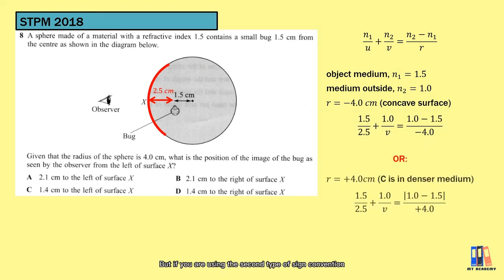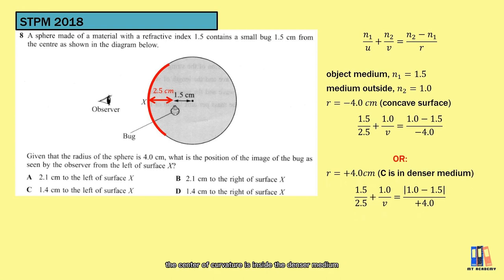But if we are using the second type of sign convention, the center of curvature is inside the denser medium, so it is a positive value, and we also need to remember to take the absolute value of n2 minus n1 that we will have 0.5 over 4 on the right-hand side of the equation.